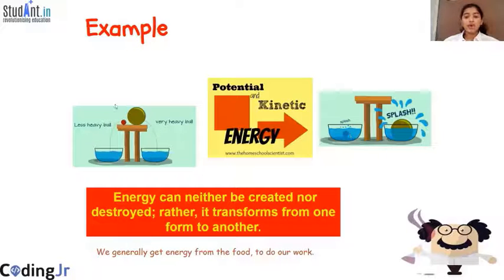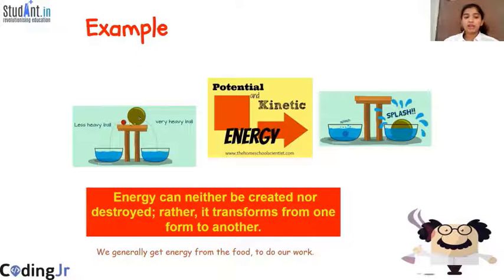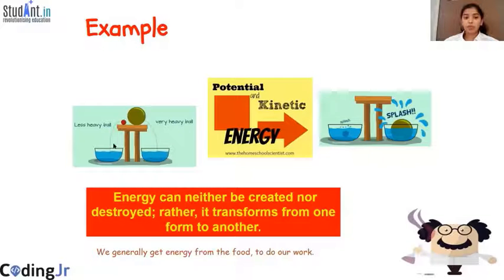Let us understand what exactly is happening. When the balls are placed on the table, they have potential energy. When we push the ball, it is in motion and has kinetic energy. When the ball hits the water, the kinetic energy from the ball is transferred to the water, and thus the water is splashed out of the bowl.